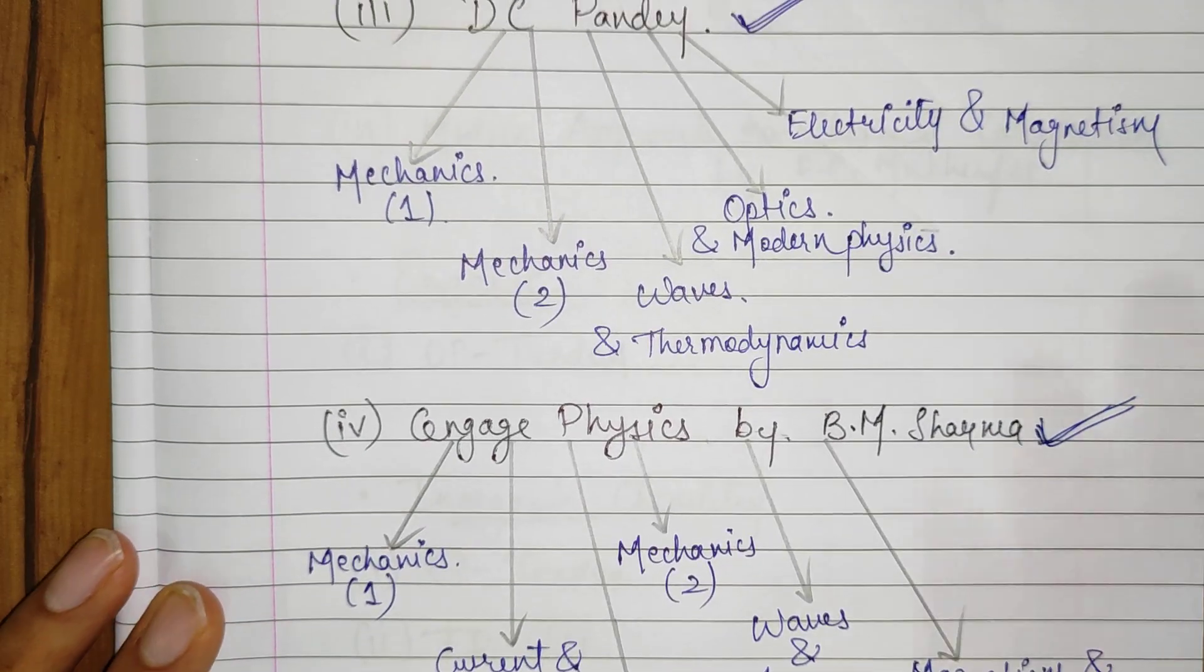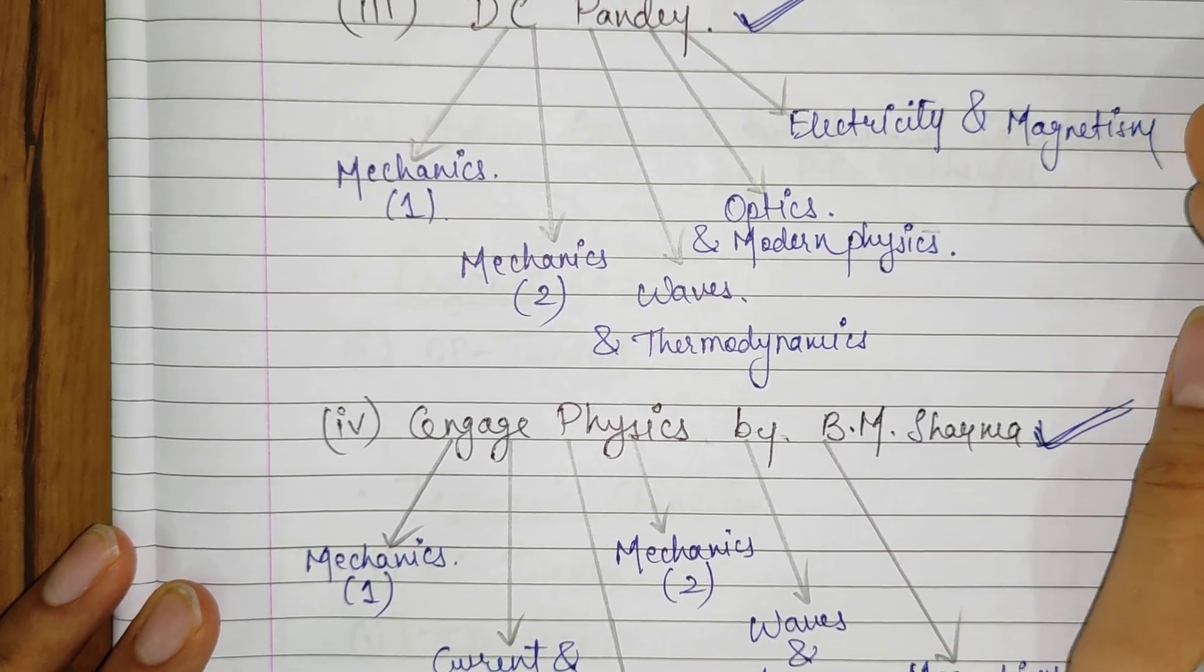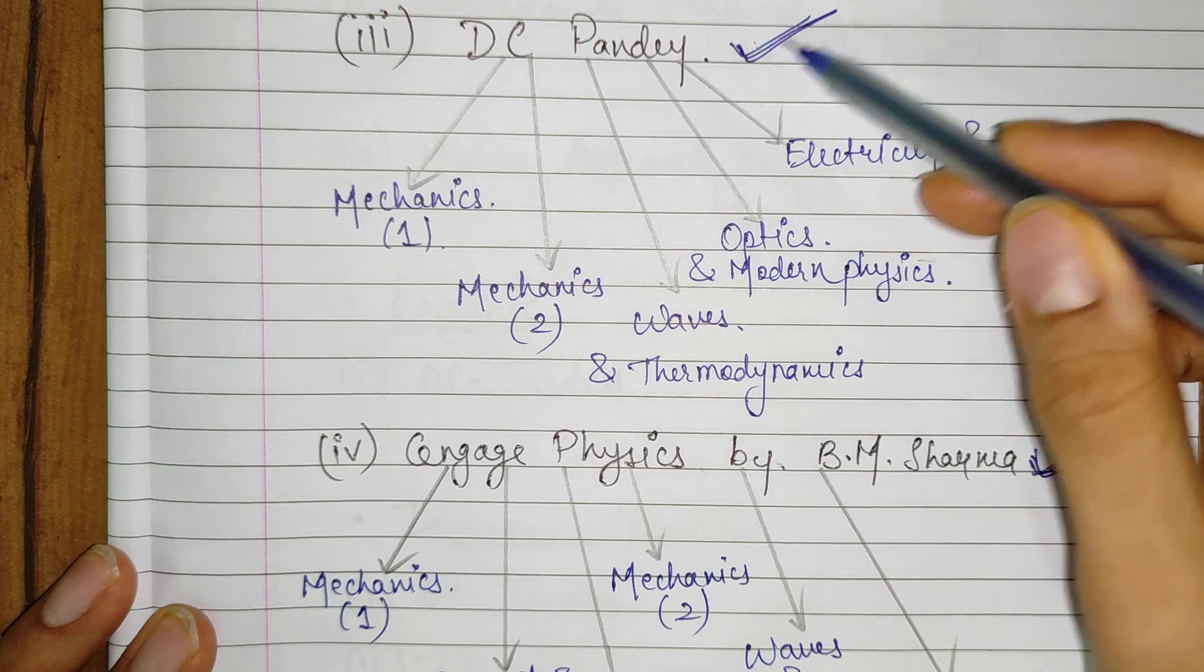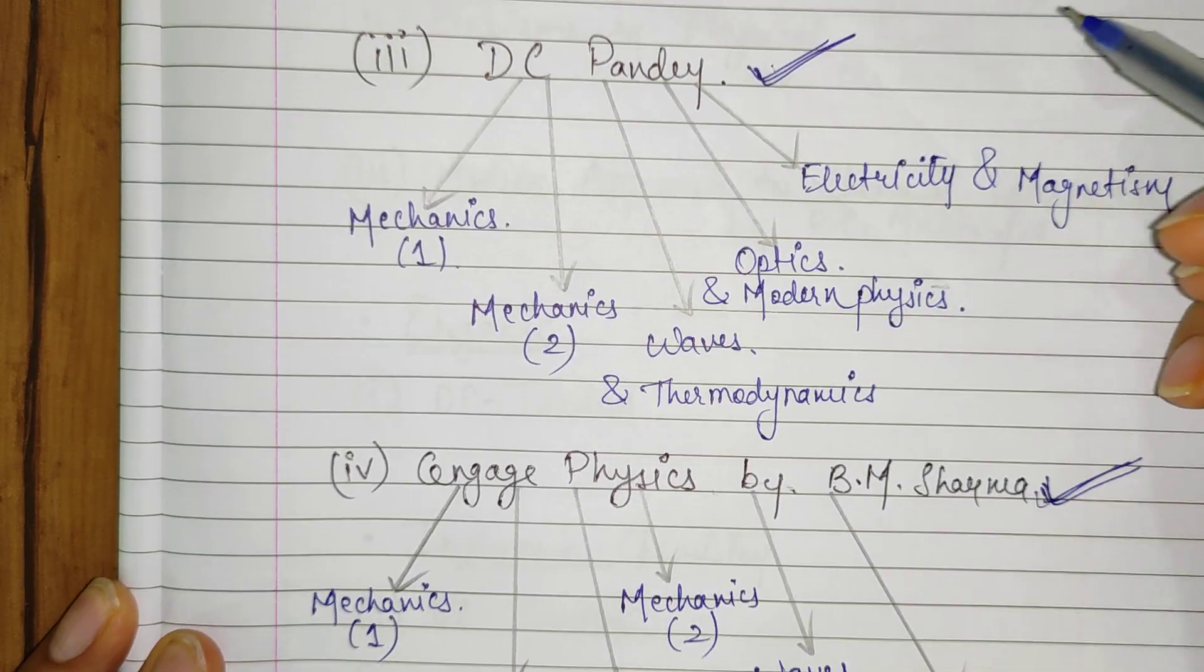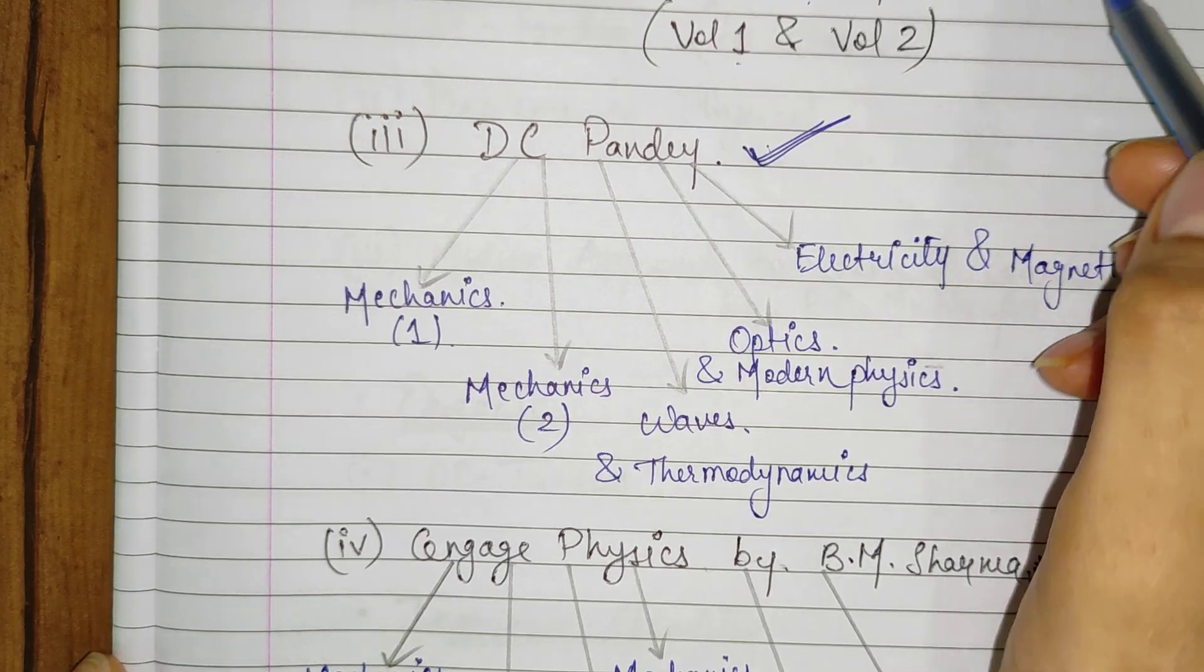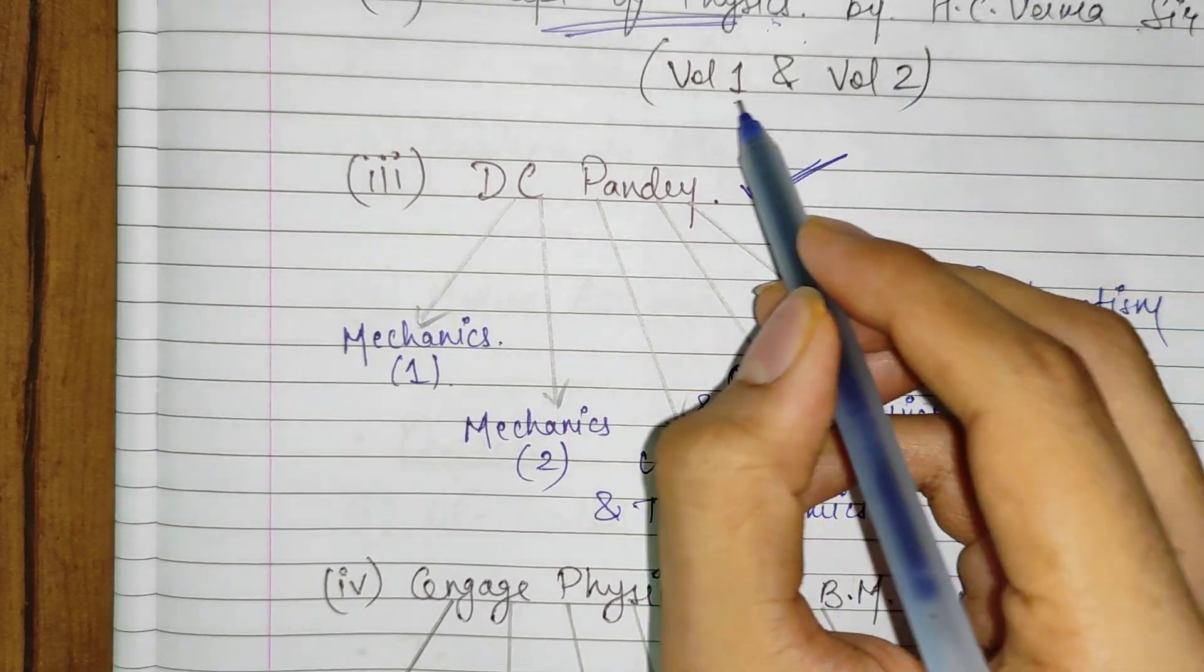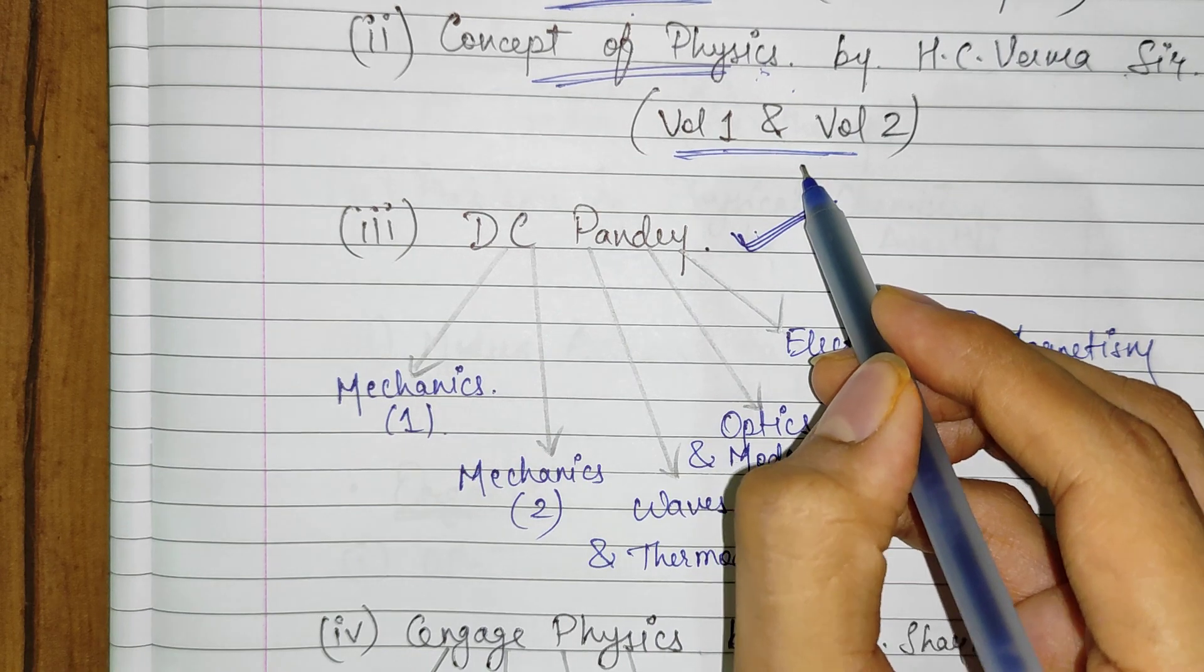Now if you are in class 12th, you surely do not have much time to solve either DC Pandey or Cengage Physics. So I would suggest you to go for the previous year papers after solving the Concepts of Physics, both parts volume 1 and volume 2.